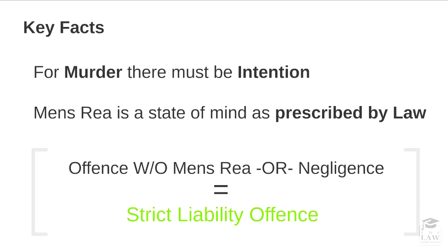There are a few key facts to keep in mind when considering the mens rea component of an offense. Firstly, for murder, a person must intend to do so — there must be intention; it cannot be recklessness or negligence, in which case it would fall under a different category, not murder. Mens rea, the actual intent or internal element of an offense, is determined as a state of mind prescribed by law. There are also instances where offenses without mens rea or negligence occur, and these are considered strict liability offenses.